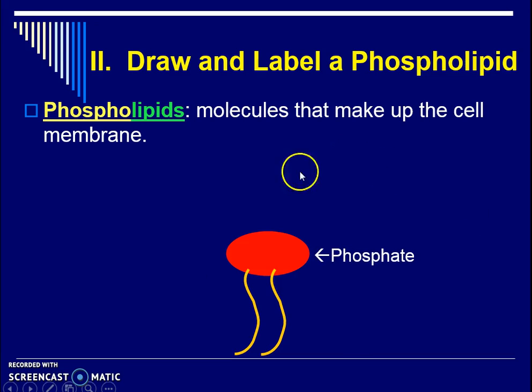This circular part is our phosphate — when we were drawing ATP, were phosphates circular? Yes, same exact thing. And then these bottom things are called lipids, sometimes called lipid tails. So this structure is the major structure that makes up the parts of the cell membrane.